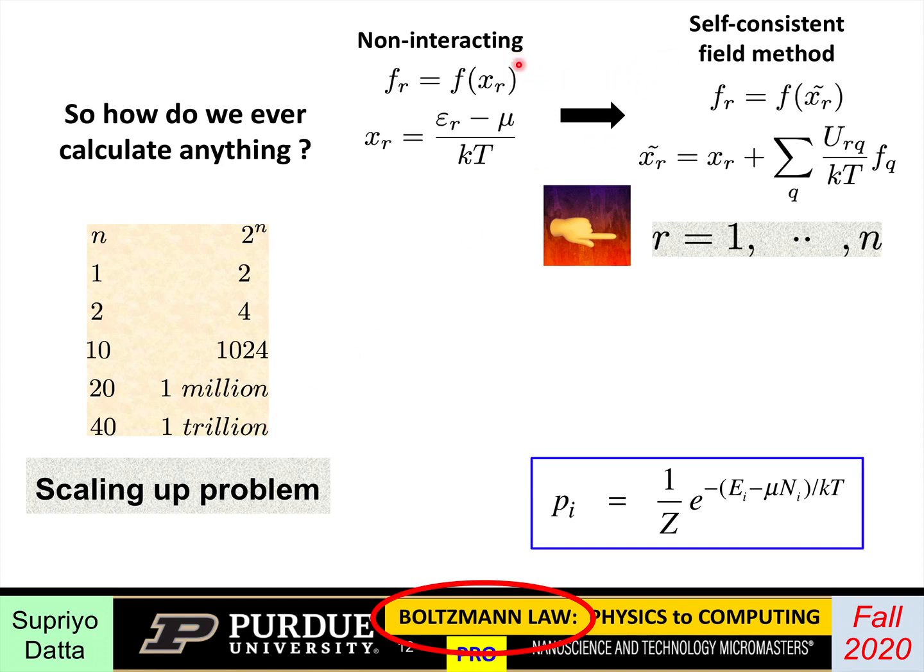The idea is that when you have non-interacting electrons, the way you calculate the occupation is by considering this quantity and finding its Fermi function. In the self-consistent field method, every energy level is kind of affected by the interaction with the other electrons. And that's described by this term. So if a level Q is occupied, then it gives rise to a potential in the r-th level and causes the r-th level to float up. And then you apply the Fermi function to this modified level. So that's how this self-consistent field method works. We'll talk about it in week one of the course.